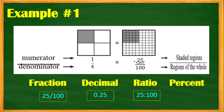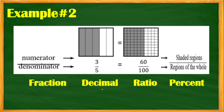For the ratio, we have 25 is to 100, or 1 is to 4. And then for the percent, just simply move the decimal point of the decimal representation to the right — one, two — so we have 25 percent.